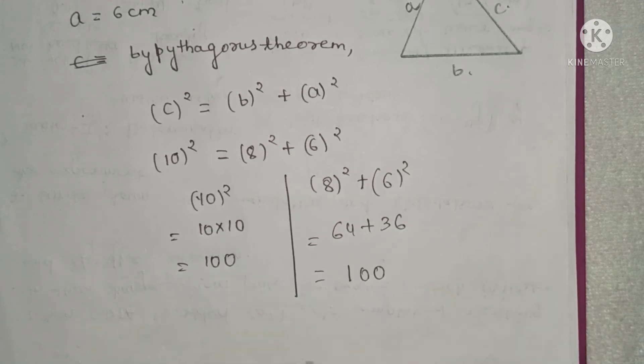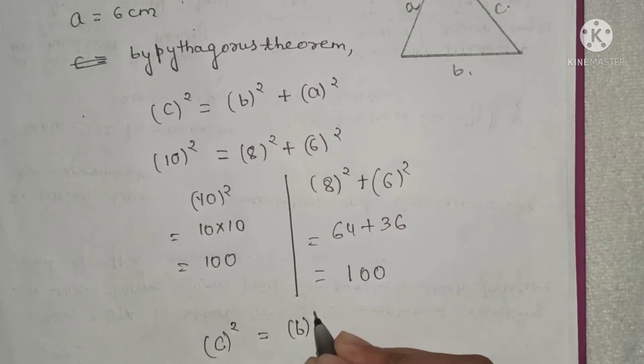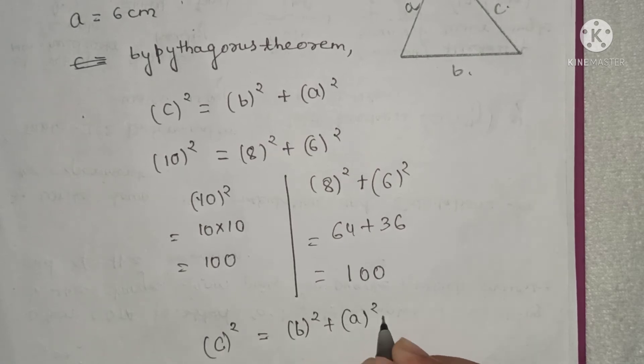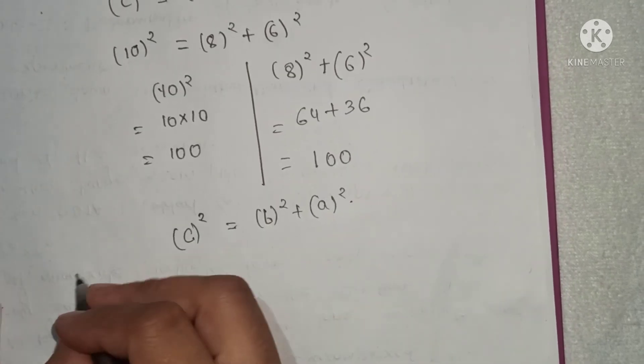Are these both equal? Yes. So we will write here c squared equals b squared plus a squared.